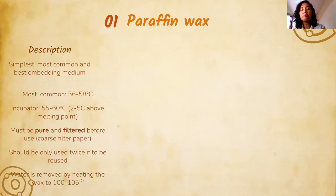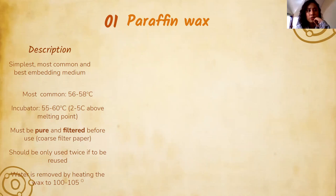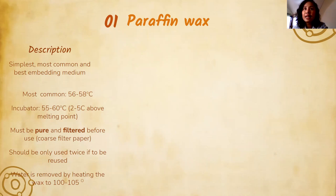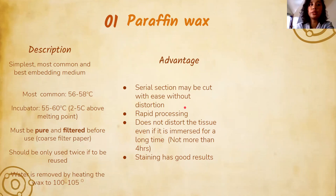Water is removed from paraffin by heating the wax up to 100–105°C. However, this can damage the plasticity and rubberized quality of the paraffin wax — so it is better to just discard the old wax rather than overheating it. Advantages of paraffin wax: you can do serial sections — many continuous sections without distortion. It is rapid to process; after one hour, infiltration is complete. It does not distort tissue even if immersed for a moderate time, and staining gives good results.